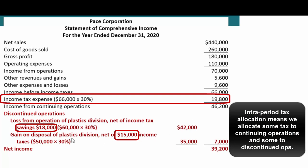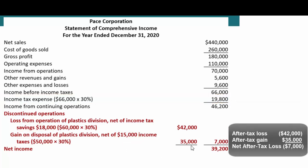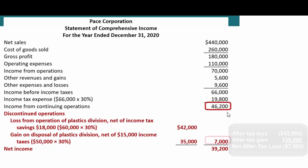We sold the division, so there are two things that happen with the discontinued operation. While we were running it, it was losing money, and then we sold it at a gain. We have to subtract income taxes of $15,000 from the $50,000 gain. So net you've got a $42,000 loss and a $35,000 gain, giving you a net $7,000 loss, which is how you went from $46,200 minus $7,000 down to $39,200.